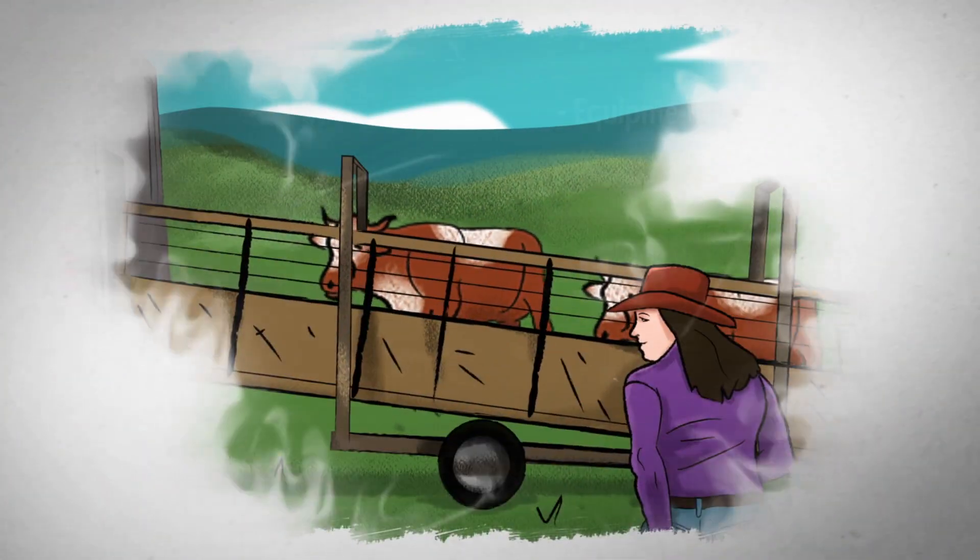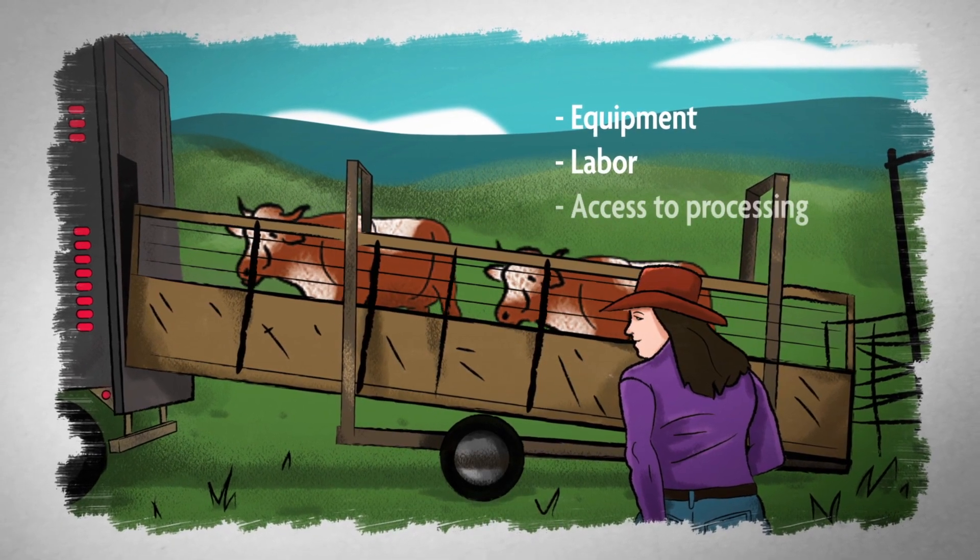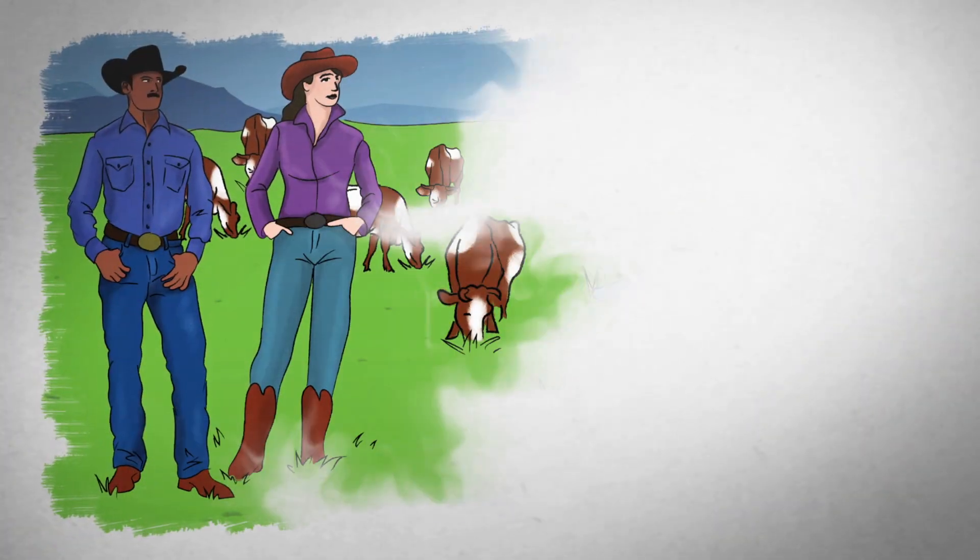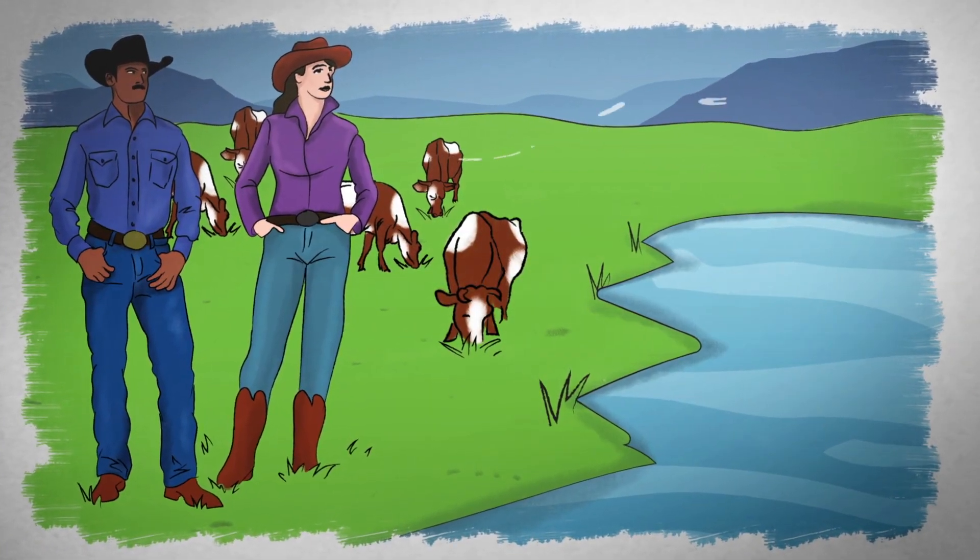Also include equipment, labor, and access to processing, markets, and infrastructure. This will help you understand the capacity of your business and your land to support grazing.